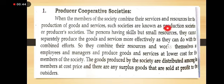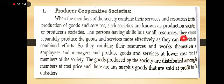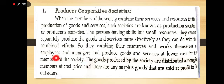When the members of the society combine their services and resources for the production of goods and services, such societies are known as production or producer societies. Persons having skills but small resources cannot separately produce goods and services as effectively as they can in combined effort. So they combine their resources, work themselves as employees and managers, and produce goods and services at lower cost for the members of the society.